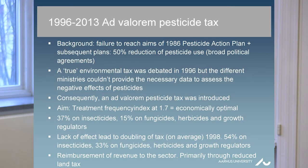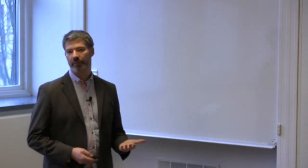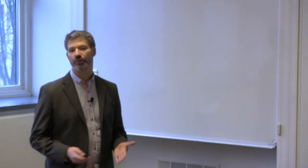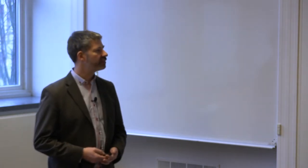That's the background for why Denmark introduced a tax back in 1996. At that time, for 10 years, we had a pesticide action plan where we tried to reduce use of pesticides by 50% due to a broad political agreement back in 1986. At that time, a true environmental tax was discussed in 1996, but the different ministries, they couldn't agree on having a true environmental tax, so they couldn't provide the necessary data to assess the negative effects of pesticides and therefore they had to give up on that plan.